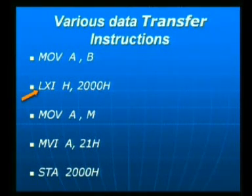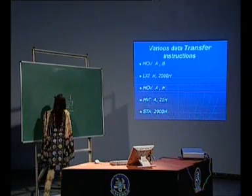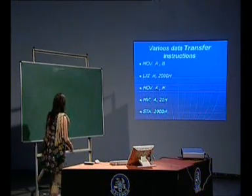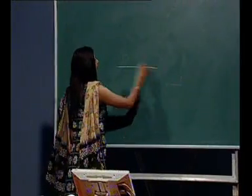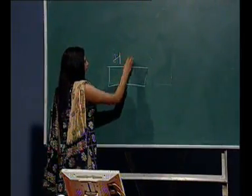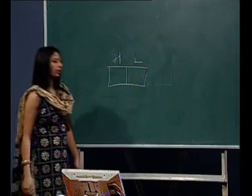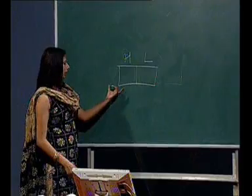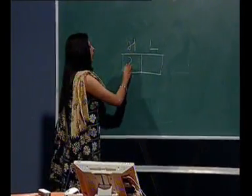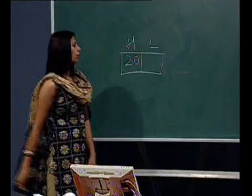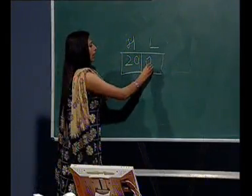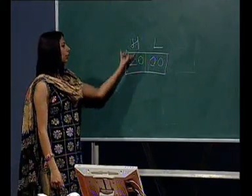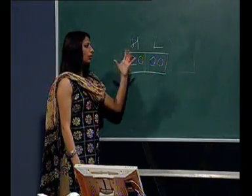The next instruction is LXI H, 2000. In this case, the address 2000 will be loaded into the register pair H and L. Since it is a 16-bit instruction with a 16-bit address, the higher order byte, that is 20, will be transferred to H, and the lower byte, that is 00, will be transferred to the L register. After execution, the contents in H register will be 20, and the contents in L register will be 00.